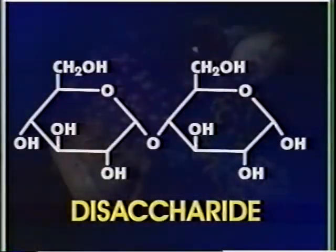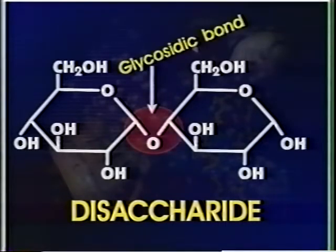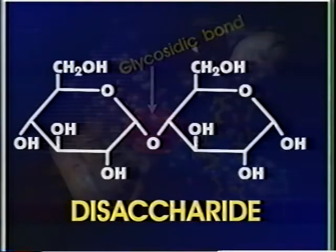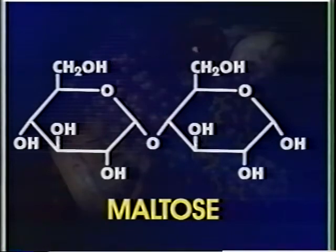Other natural sugars, called disaccharides, contain two sugar molecules joined by an ether linkage or glycosidic bond. A disaccharide consisting of two alpha-glucose molecules is called maltose. We will see it again later today.